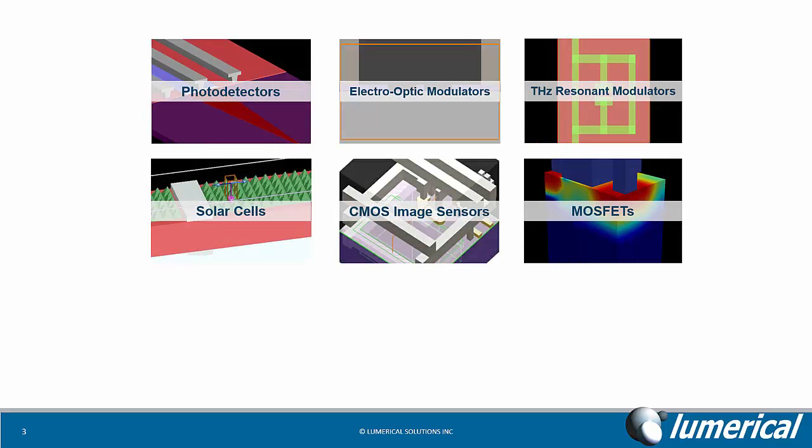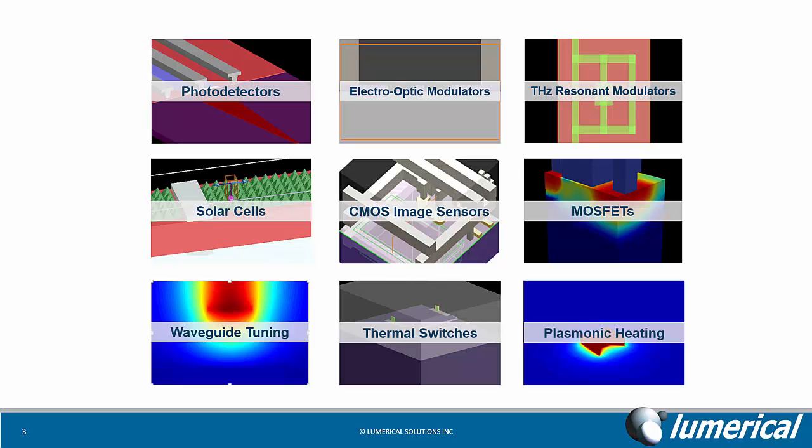Some examples of charge transport simulations include photo detectors, electro-optic modulators, terahertz resonant modulators, solar cells, CMOS image sensors, and MOSFETs. Some examples of heat transport include waveguide tuning, thermal switching, and plasmonic heating.